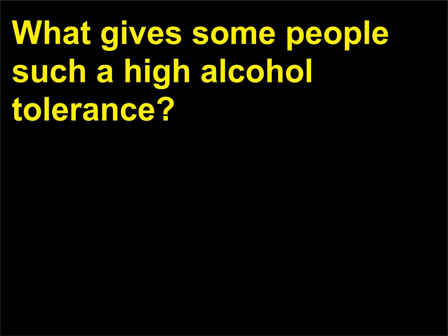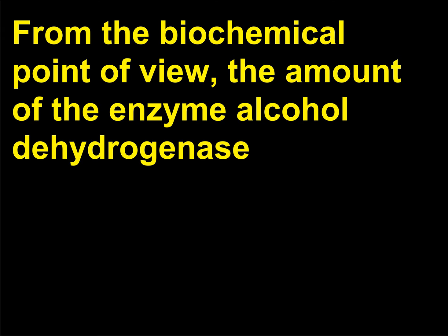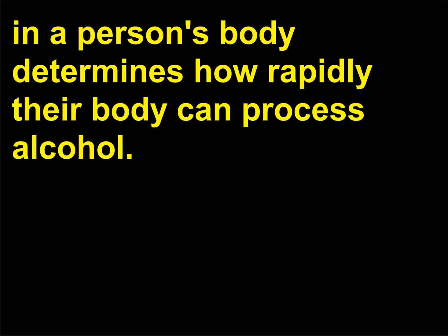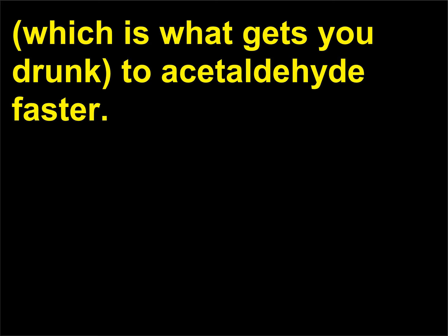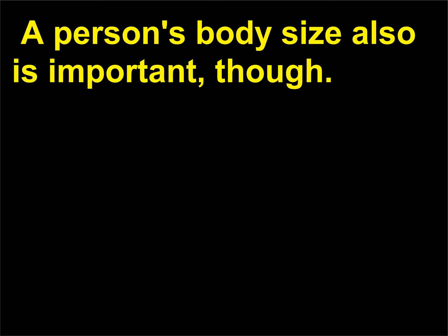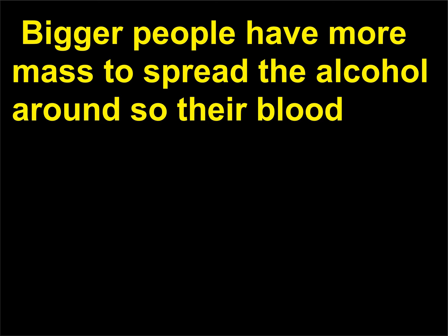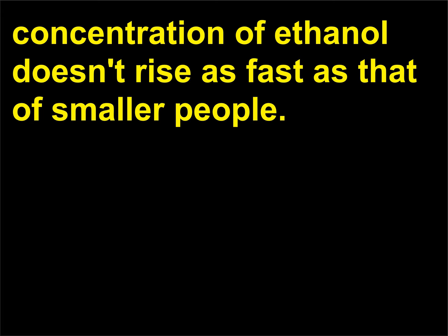What gives some people such a high alcohol tolerance? From the biochemical point of view, the amount of the enzyme alcohol dehydrogenase in a person's body determines how rapidly their body can process alcohol. People with more alcohol dehydrogenase can convert ethanol, which is what gets you drunk, to acetaldehyde faster. A person's body size also is important — bigger people have more mass to spread the alcohol around so their blood concentration of ethanol doesn't rise as fast as that of smaller people.